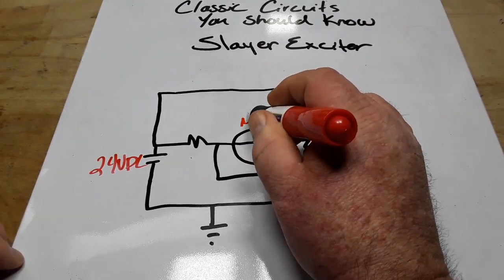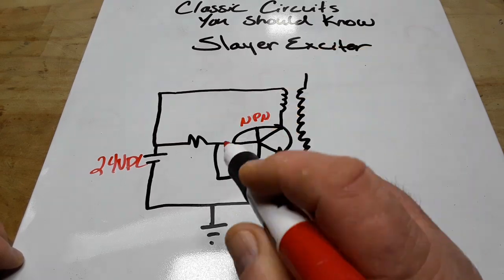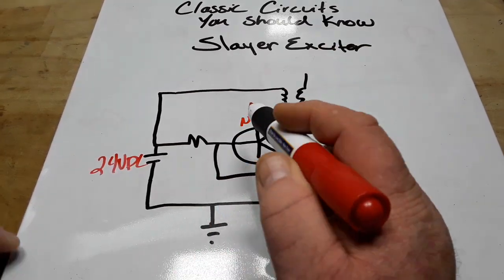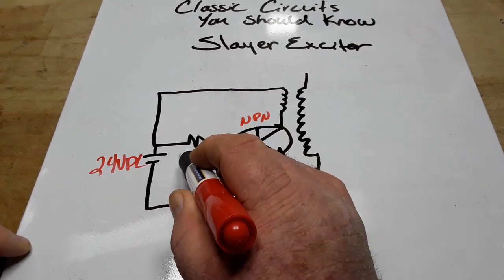Here we have an NPN transistor. Here we have a current limiting resistor for the transistor, we'll go like, I don't know, 47K.